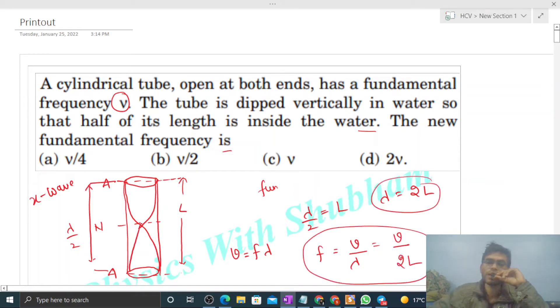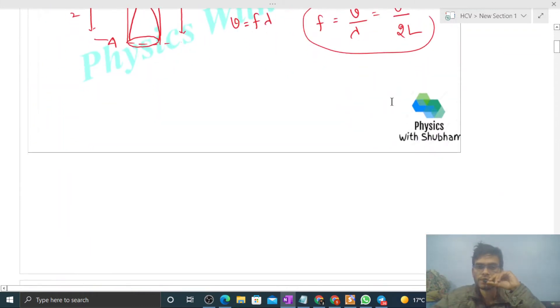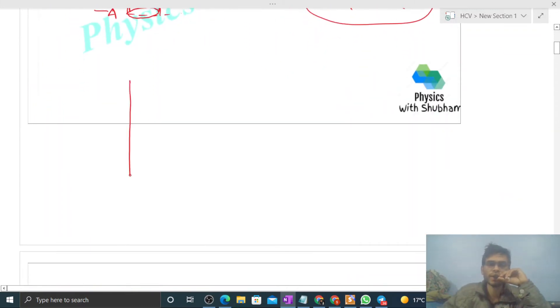Now in the second case, what happens? In the second case we have something like this: this cylindrical tube has half its length dipped in water, something like this. So here we will have water. This length is L/2, right?